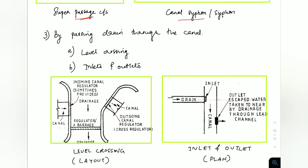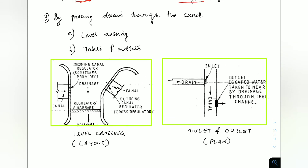The third way is passing the drain through the canal — here both are at the same level. It is done in two ways: level crossing and inlets and outlets. Level crossing means that both the canal and drainage are large water bodies — the canal has good discharge and the drainage is also in flood condition.